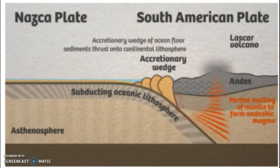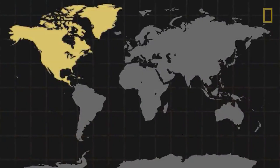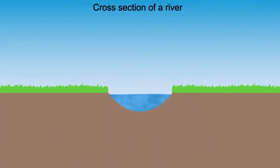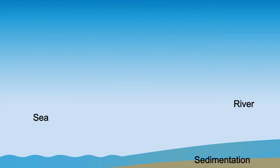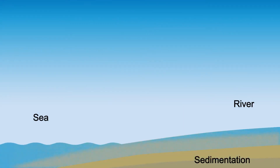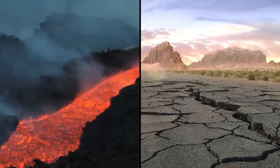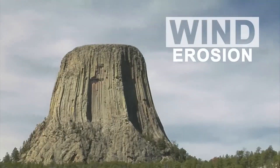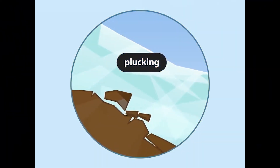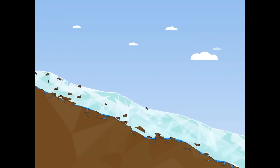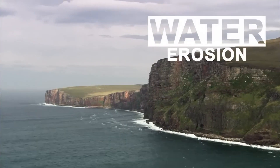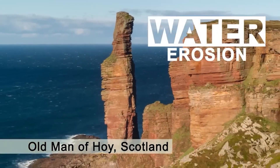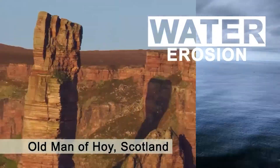These geological processes constantly reshape Earth's surface, impacting the distribution of land and water. In addition to tectonic processes, natural forces like erosion and sedimentation significantly influence Earth's surface. Erosion is the gradual wearing-away of Earth's surface due to natural processes like water, wind, and ice. Eroded materials are transported and eventually deposited elsewhere as sediments, contributing to the formation of new landforms such as deltas and coastal plains. These processes can significantly alter the shape and size of continents, which in turn affects the distribution of land and water on Earth's surface.